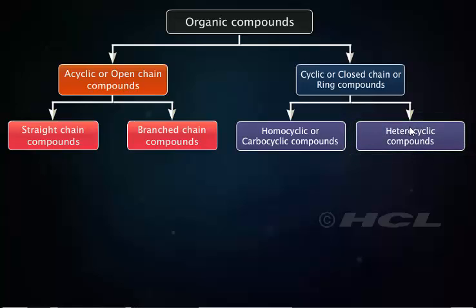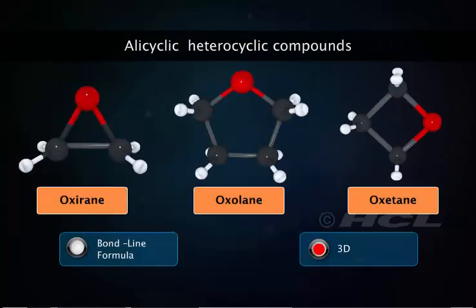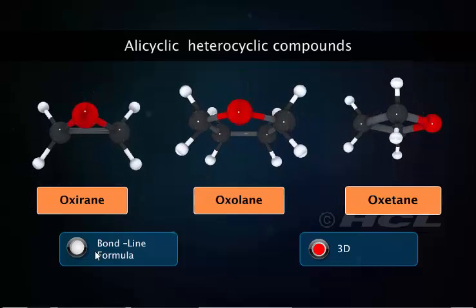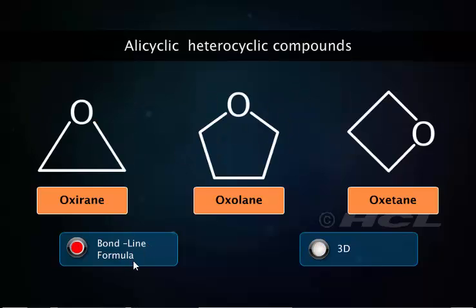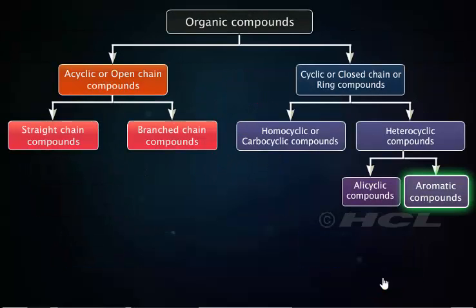Heterocyclic compounds contain one or more heteroatoms such as oxygen, nitrogen, sulfur, phosphorus, etc., in their rings. Depending upon the chemical behavior, the heterocyclic compounds are further classified into alicyclic and aromatic compounds. Alicyclic heterocyclic compounds are aliphatic cyclic compounds. Oxirane, oxetane, and oxolane are examples of compounds that contain an oxygen heteroatom in their structures.